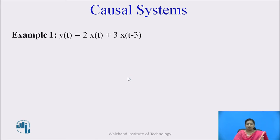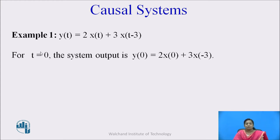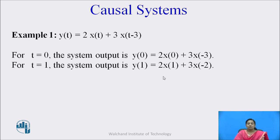Let us see the example of a causal system. Here, y(t) = 2·x(t) + 3·x(t−3). Substituting t = 0: y(0) = 2·x(0) + 3·x(−3). The output depends on the present and past value of the input. For t = 1: y(1) = 2·x(1) + 3·x(−2). Here again, the output depends on the present value and past value of the input.